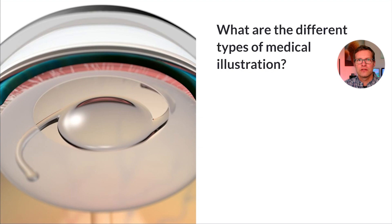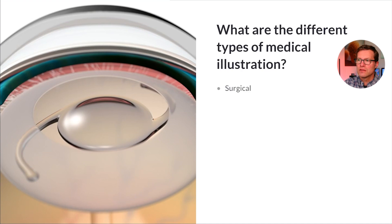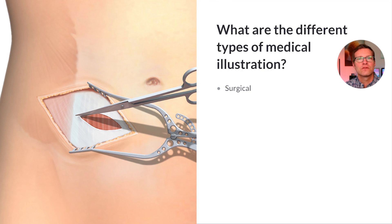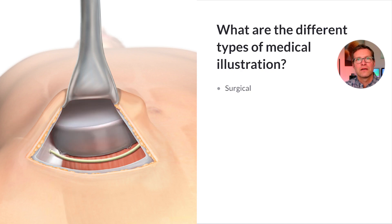What are the different types of medical illustration? We'll break it down based on the type of audience and the intention of the illustration or animation. The first type is surgical illustration. Surgical illustrations are designed to communicate to surgeons — things you might see in a surgical atlas or in a surgical training program, where illustrations or animations are designed specifically to educate surgeons on a specific process, technique, or use of specific medical devices and tools.